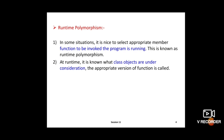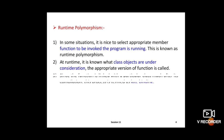C++ supports a mechanism known as virtual functions to achieve runtime polymorphism. At runtime, it is known what class objects are under consideration, and the appropriate version of the function is called — meaning whichever class the object is created in, that function is invoked at runtime.